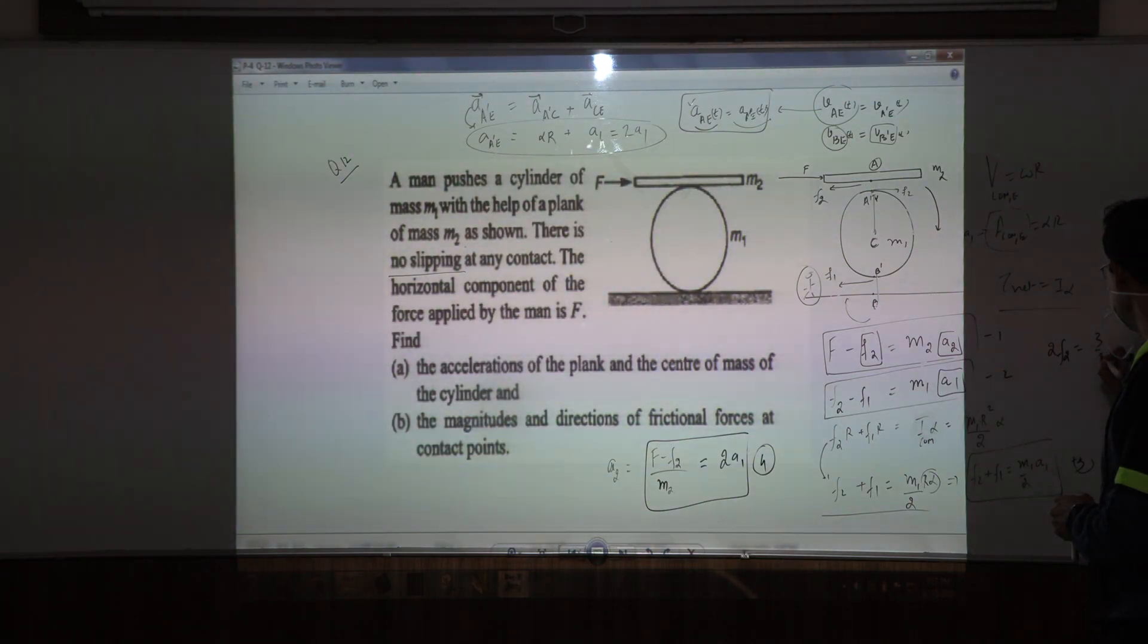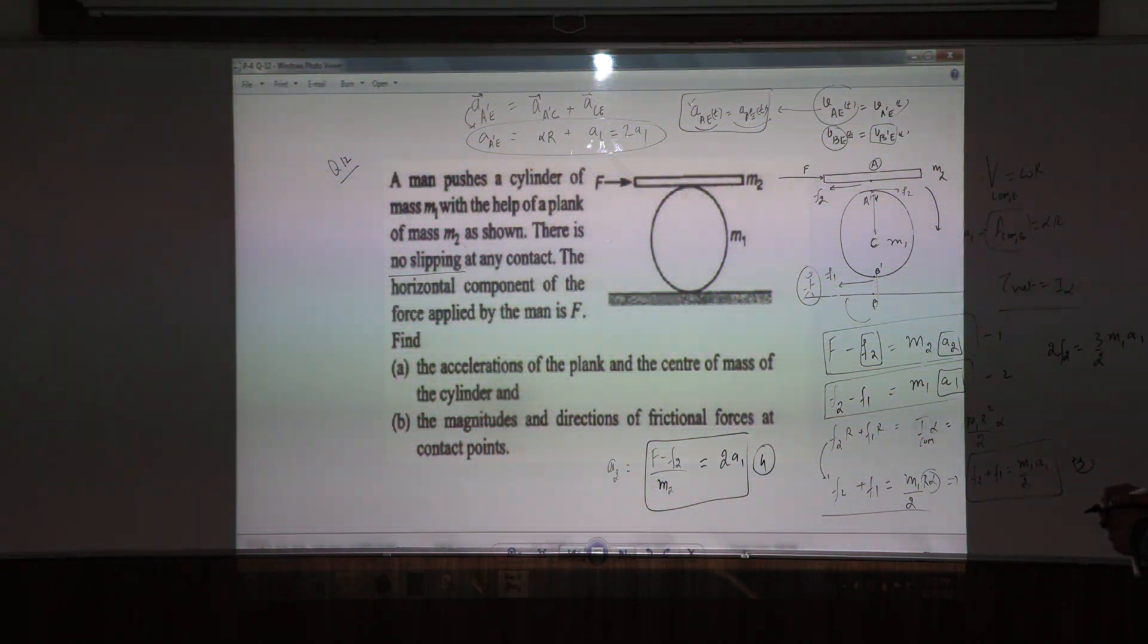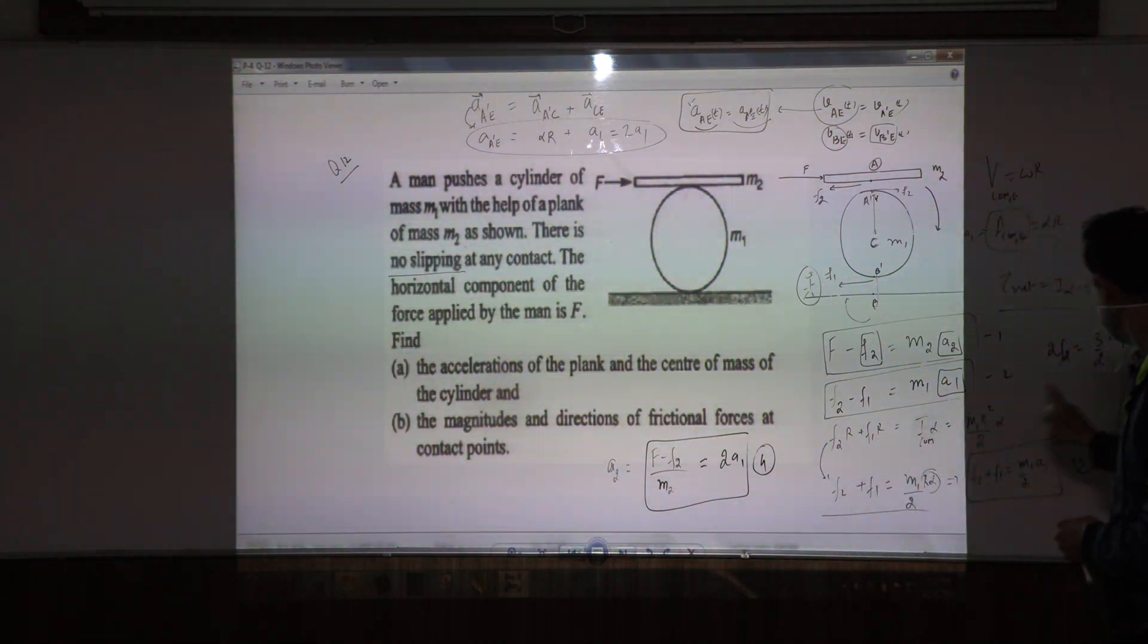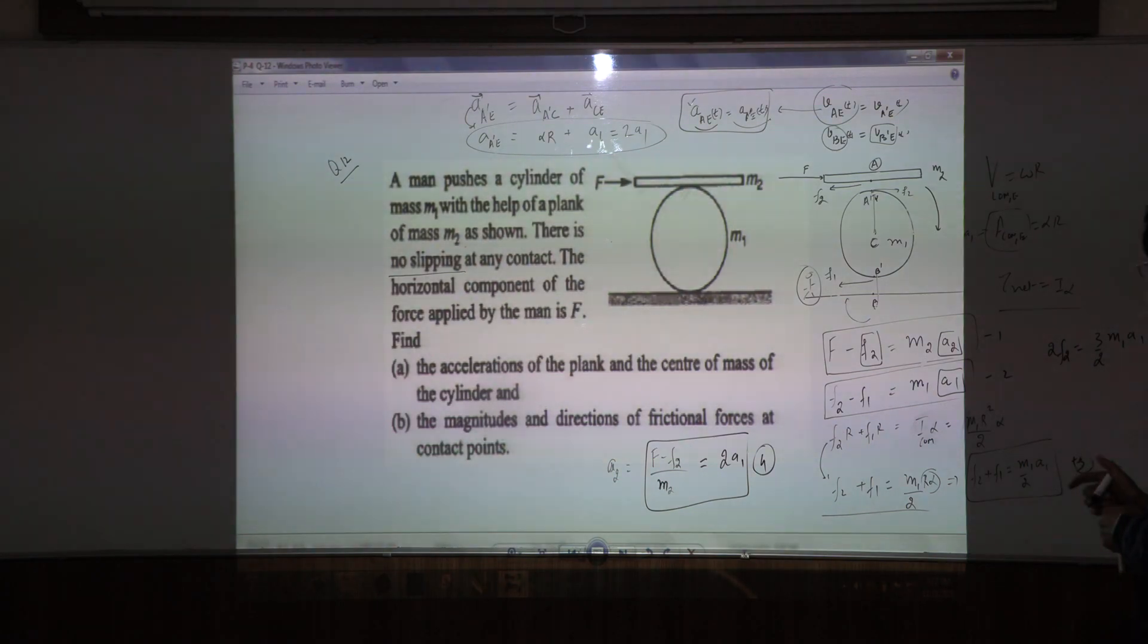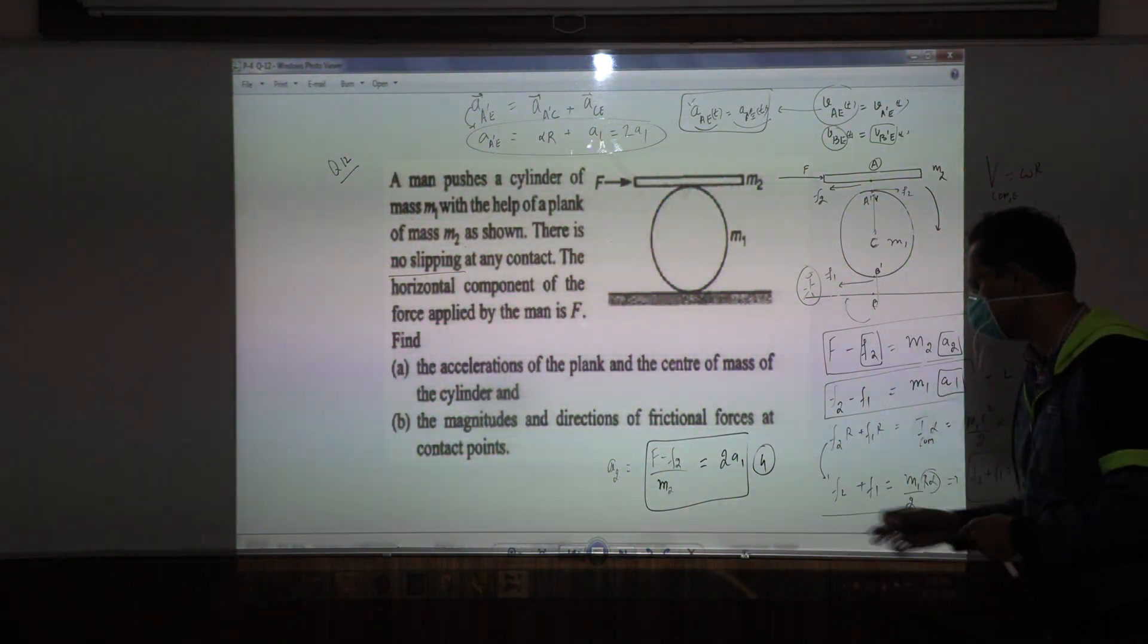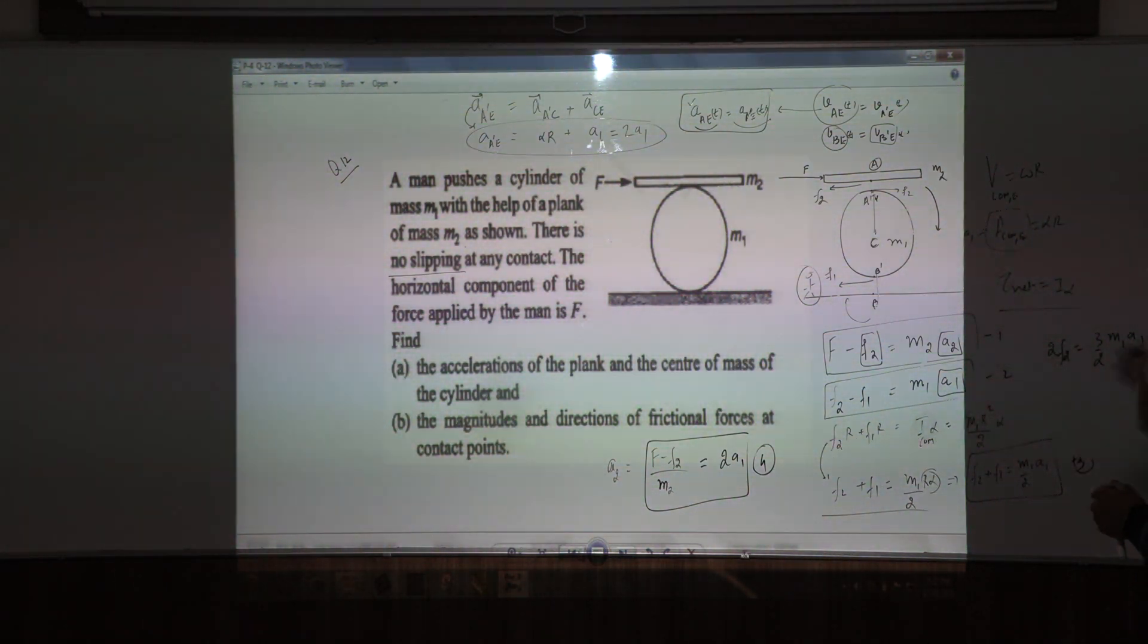this and this will give you 3 by 2, M1, A1. So that is okay. But now if you look at these two equations, they have just got two unknowns, F2 and A1. And from these two equations, you can get F2 by eliminating A1.